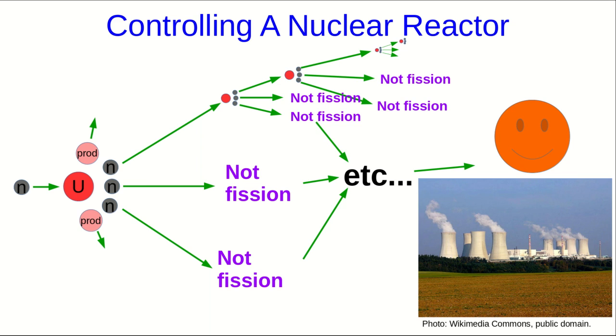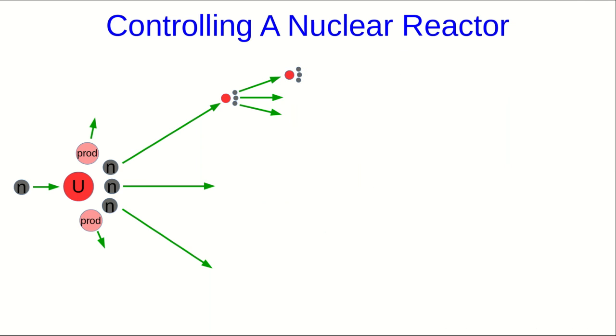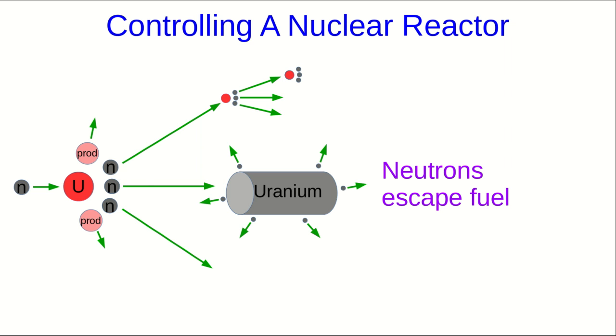To achieve that, we need to understand what the other possibilities are when a neutron hits a uranium, or doesn't hit it. How do you get some of the neutrons to not cause fission? The first is that some neutrons will simply escape the fuel, will head out into the rest of the environment, and not hit any more uranium.